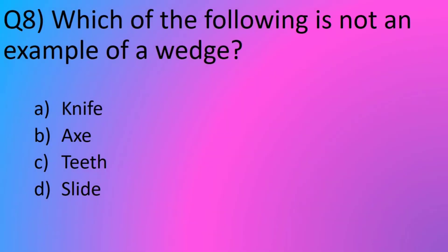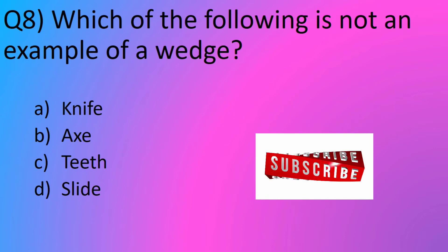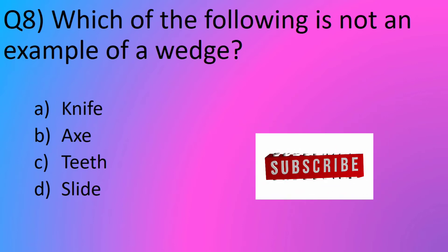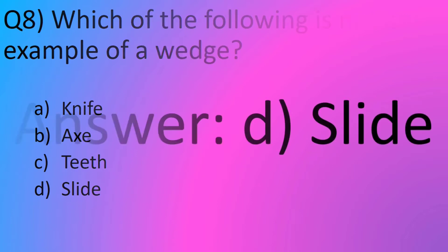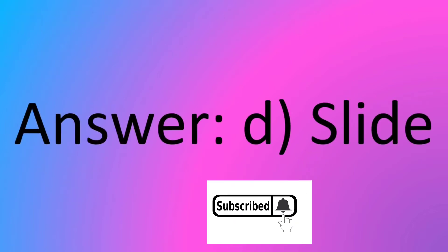Question number 8. Which of the following is not an example of a wedge? Option A, knife. Option B, axe. Option C, teeth. Option D, slide. The answer is option D, slide.